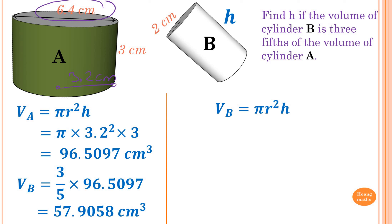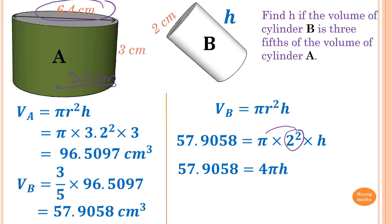We know that volume B equals pi r squared h, so substituting: 57.9058 equals pi times 2 squared times h. Since 2 squared is 4, we have 57.9058 equals 4 pi h. Dividing both sides by 4 pi, h equals 4.6 centimeters. Thank you so much for watching.